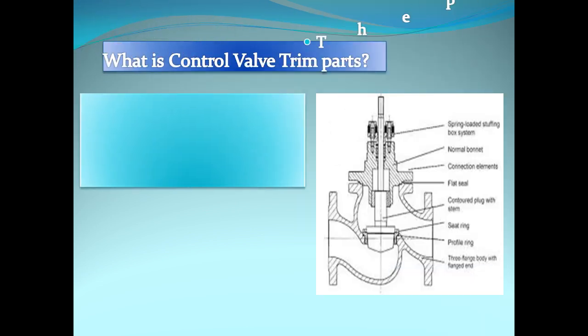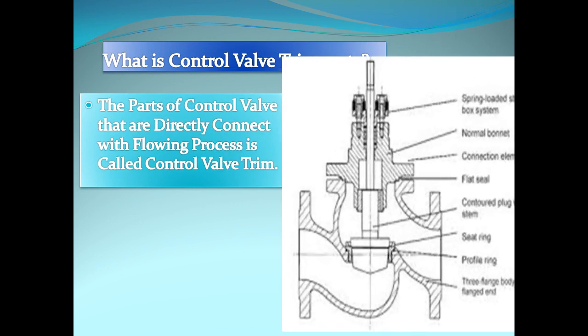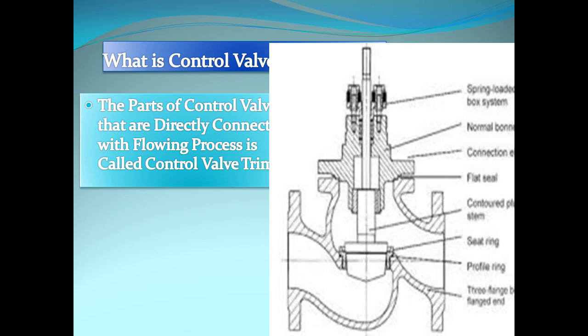What is control valve trim parts? The parts of control valve that are directly connected with flowing process are called control valve trim parts. Here we discuss we have plug, seats, stem. They all are trim parts of control valve.